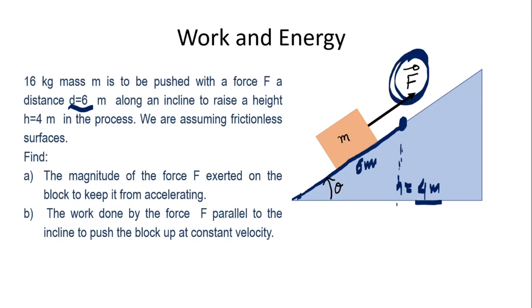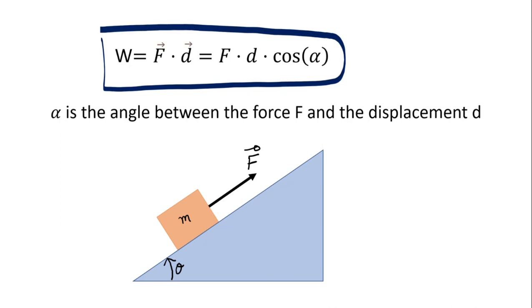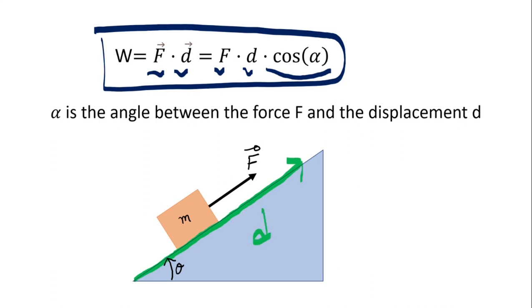Once we find this force F, we need to find how much work is done by this force. The definition of work done by any constant force is the force scalar displacement, which is the force magnitude times the distance traveled times cosine of alpha. Alpha is the angle between the direction of the force and the direction of displacement. First, we need to find the direction of displacement — look where the object is moving.